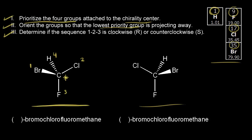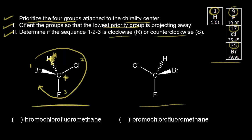Step three: determine if the sequence one, two, three is clockwise or counterclockwise. We ignore the hydrogen and look at what's happening with one, two, and three going around in a circle. They go around clockwise. Therefore, this is the R enantiomer — R-bromochlorofluoromethane.